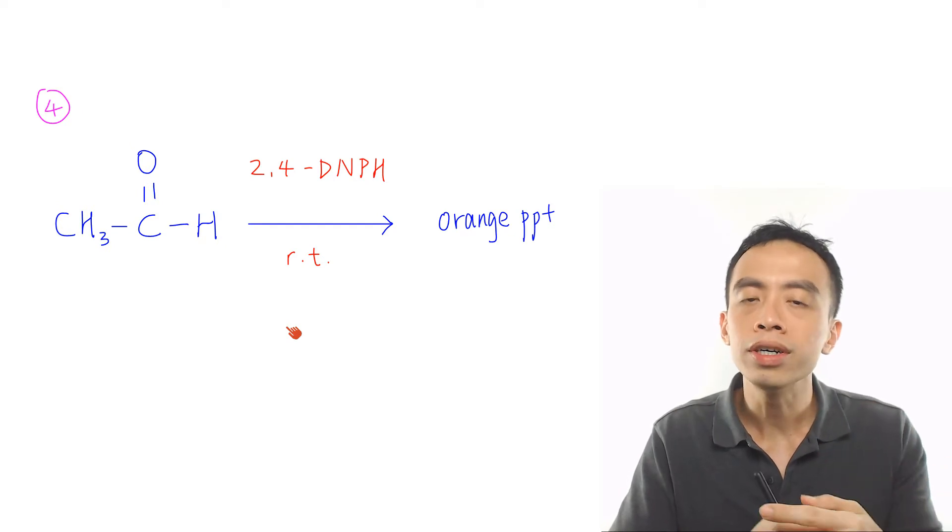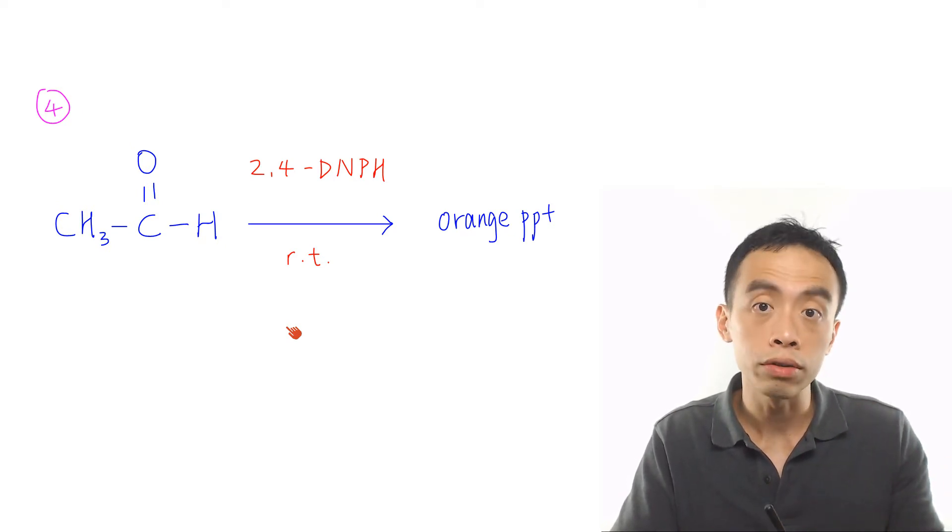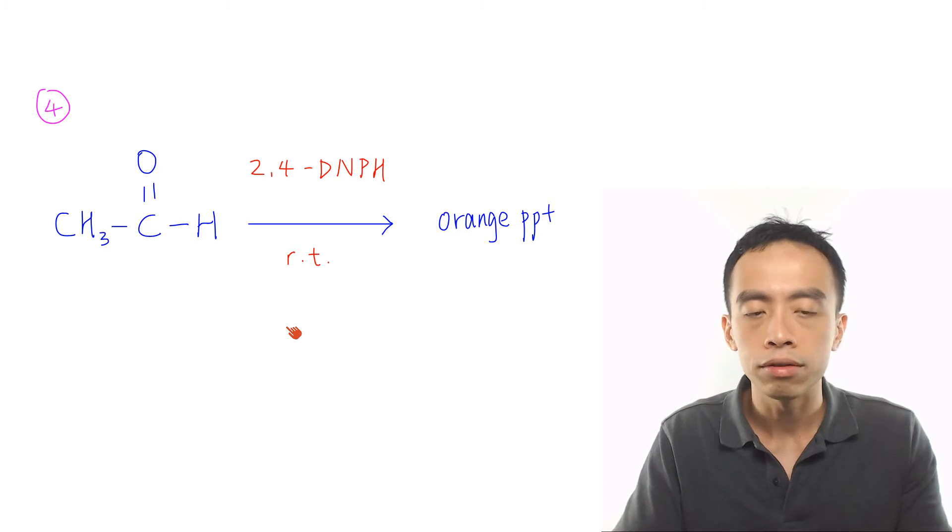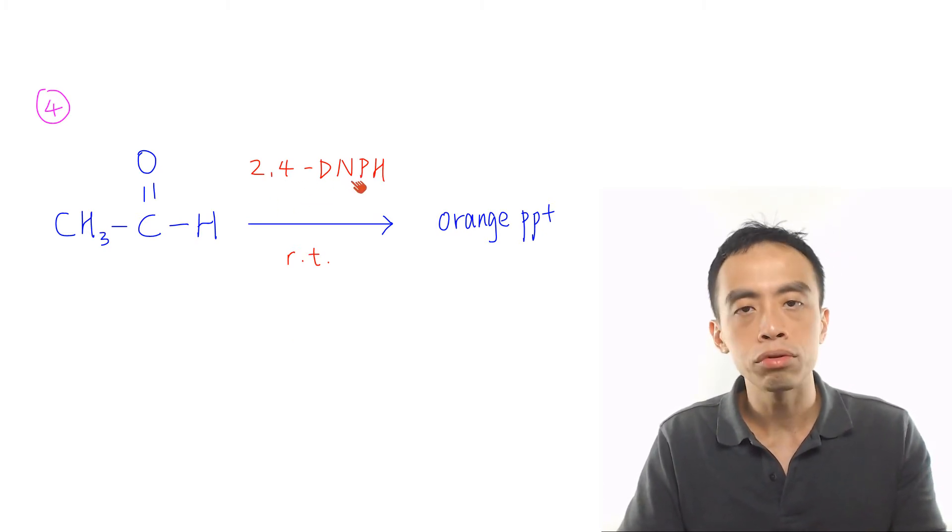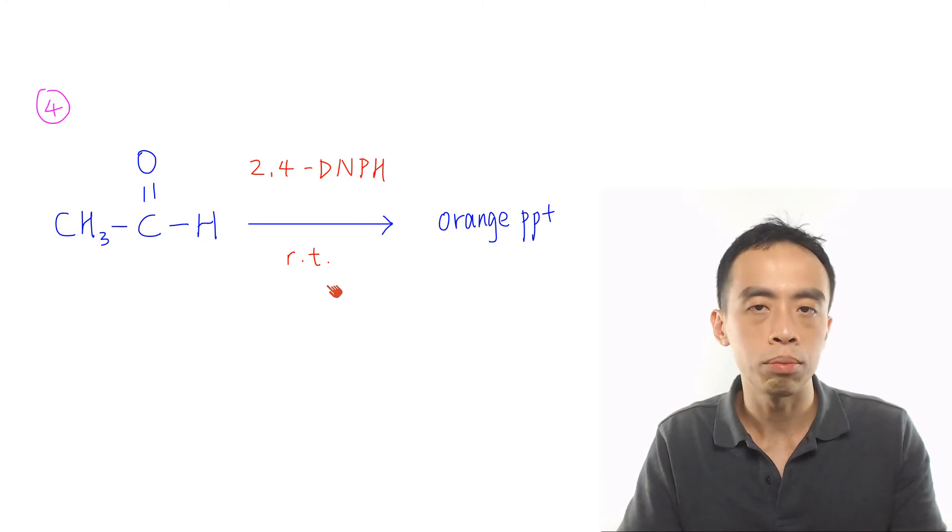Must-know reaction number 4 is the condensation reaction of aldehydes to give us orange precipitate. Now this is done using 2,4-DNPH or 2,4-dinitrophenylhydrazine at room temperature. Take note this is also a test for carbonyl compounds.